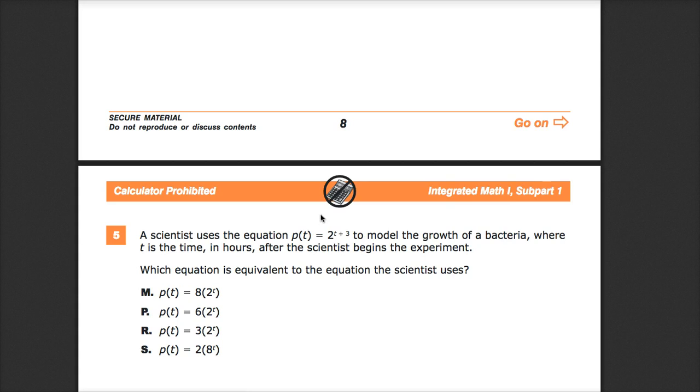A scientist uses the equation P sub T equals 2 raised to the power T plus 3 to model the growth of bacteria, where T is the time in hours after the scientist begins the experiment. Which equation is equivalent to the equation the scientist uses?